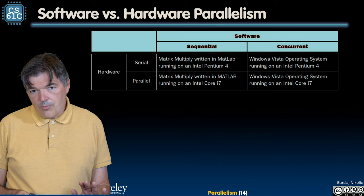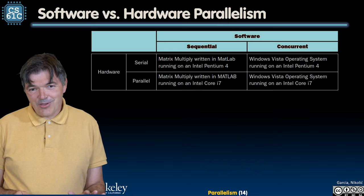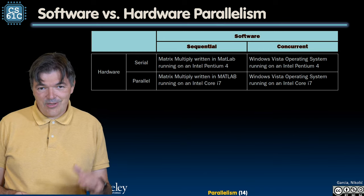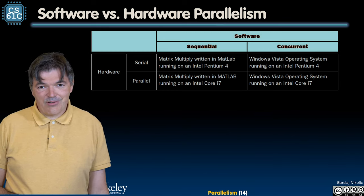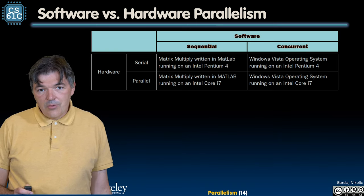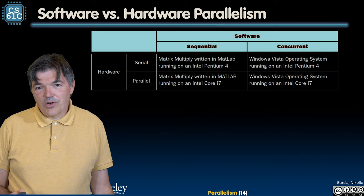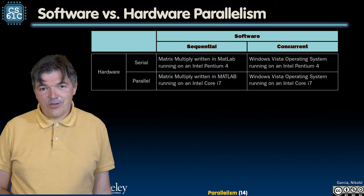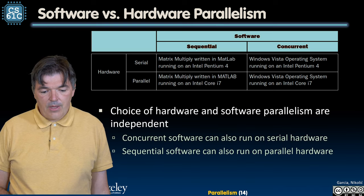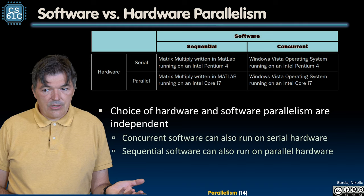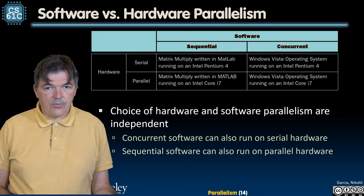This example is Vista, an operating system that predates Windows 7 and was around the time of Windows XP. We use multi-programming to run multiple processes, which looks like it runs concurrently even though we are running it on serial hardware. The choice of hardware and software parallelism are generally independent. Concurrent software can run on serial hardware, and sequential software can run on parallel hardware.